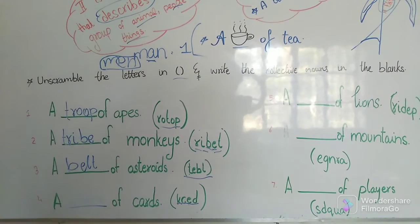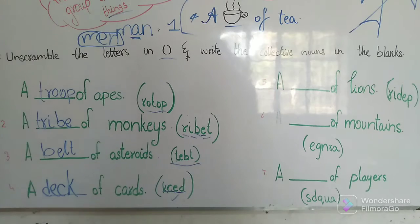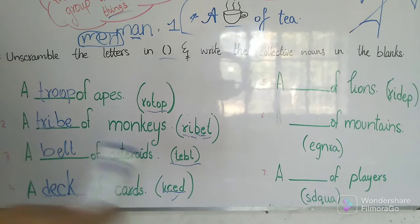So fourth one, a blank of cards. A bundle of cards, or maybe a pair of cards? No, we are going to use this word. So it's K-C-E-D. So it makes ked? No, it's D-E-C-K. What about D-E-C-K? Deck, yes. So we are going to start from the right and go till left, till the end. So it would be deck, a deck of cards.